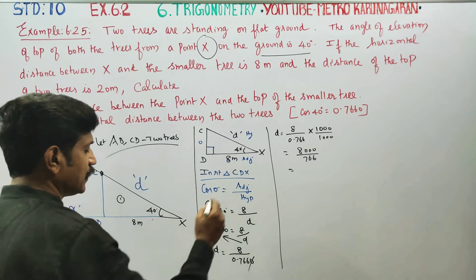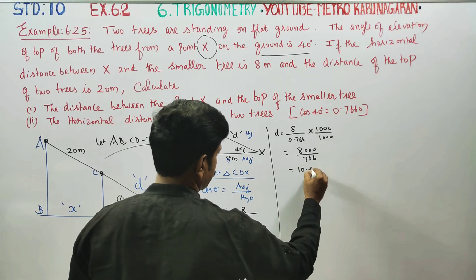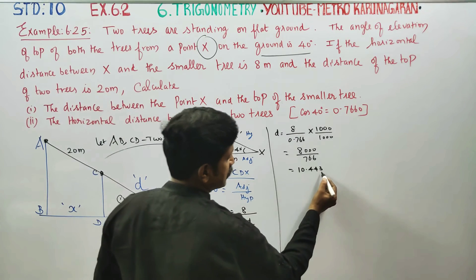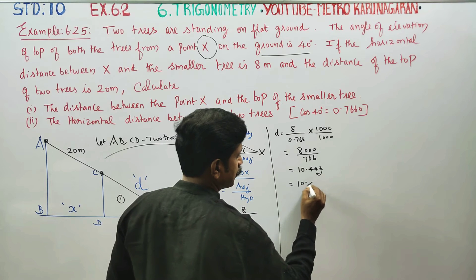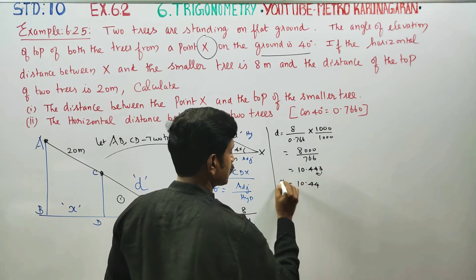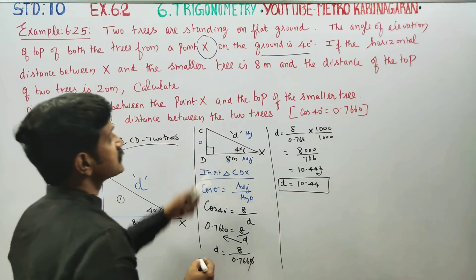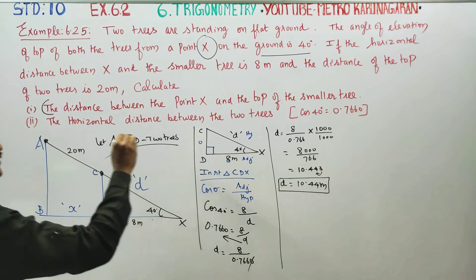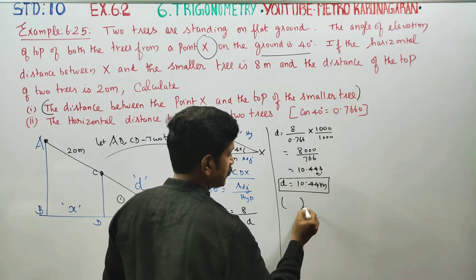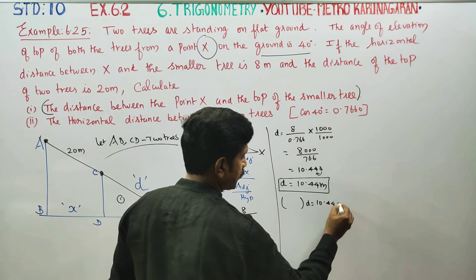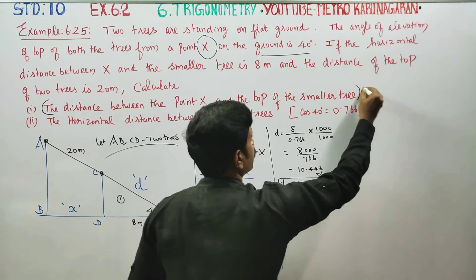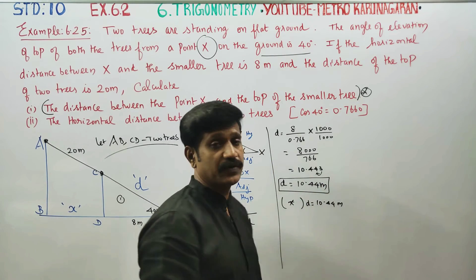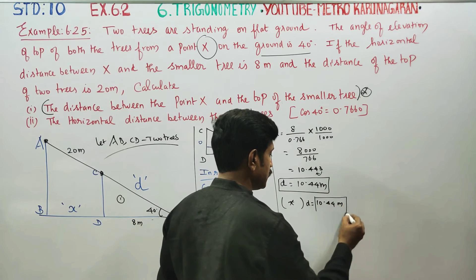Dividing 8000 by 766, it gives 10.443, which rounds to 10.44. This is the first answer — it will be in meters. The distance between point X and the top of the small tree, D, is equal to 10.44 meters.